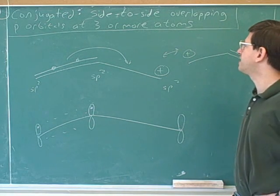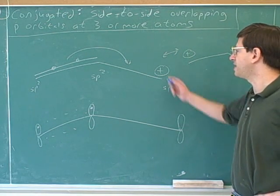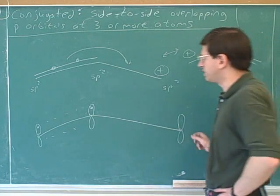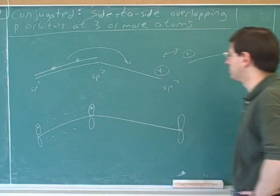So again, we're seeing how these side-to-side overlapping p orbitals are really the basis of resonance. The reason why we can draw different resonance structures is when we have these side-to-side overlapping p orbitals.